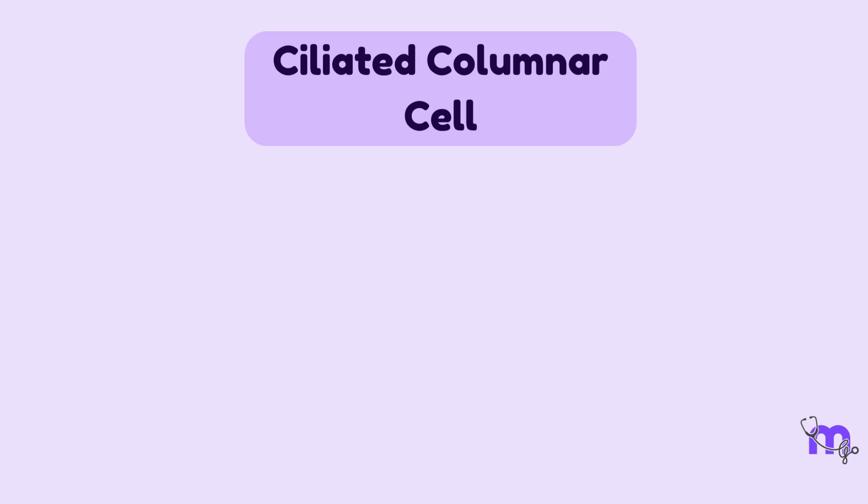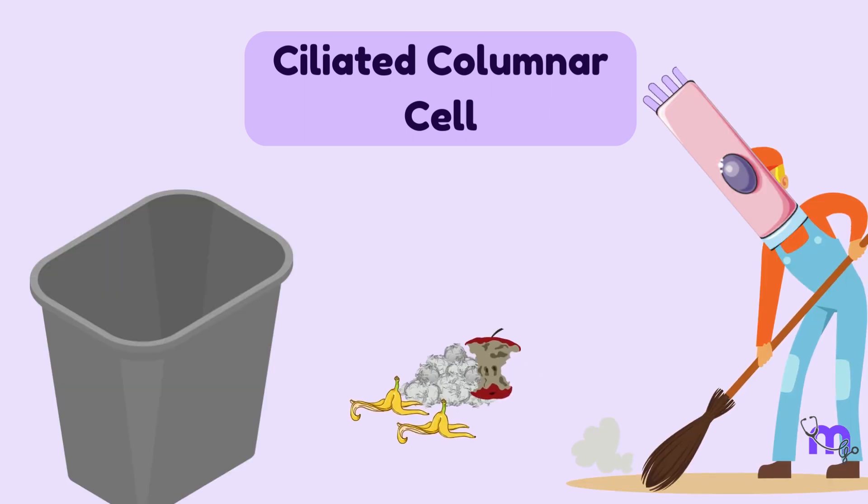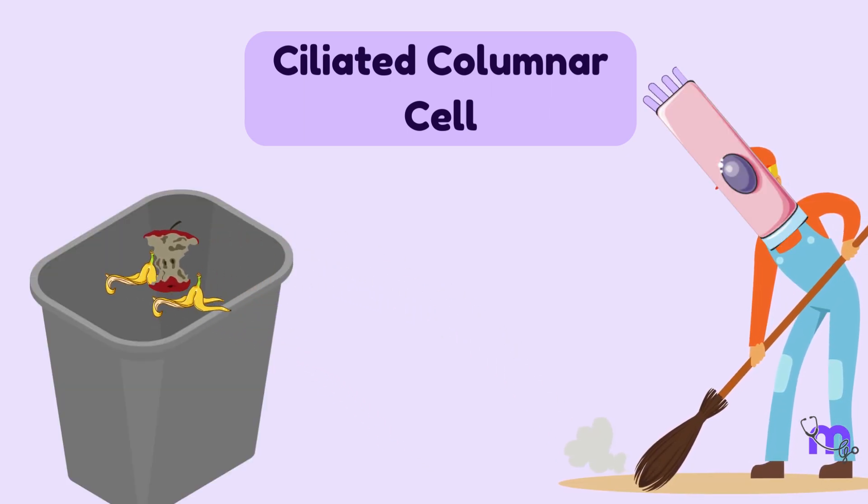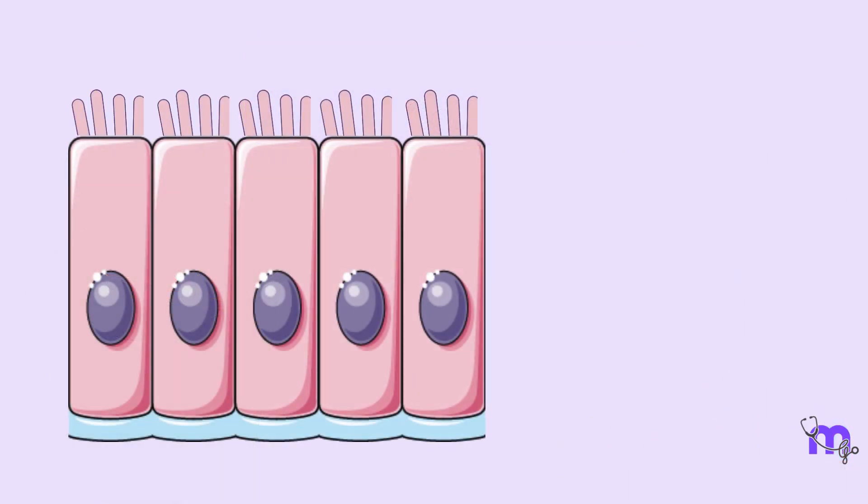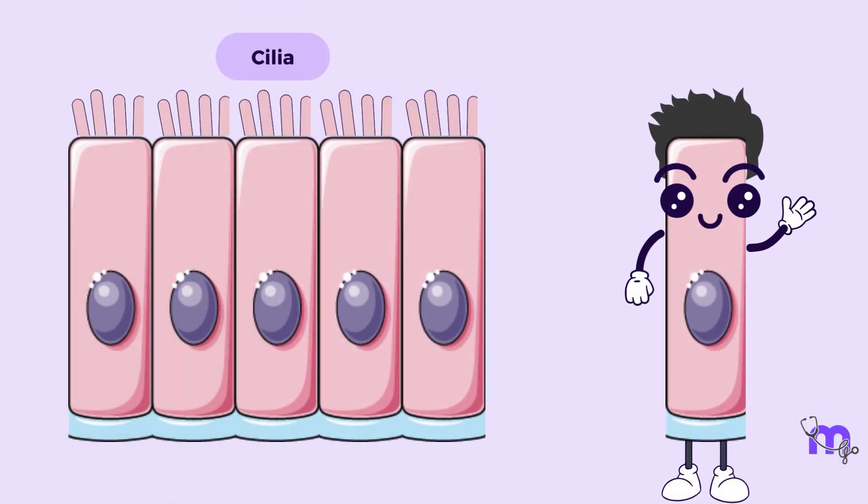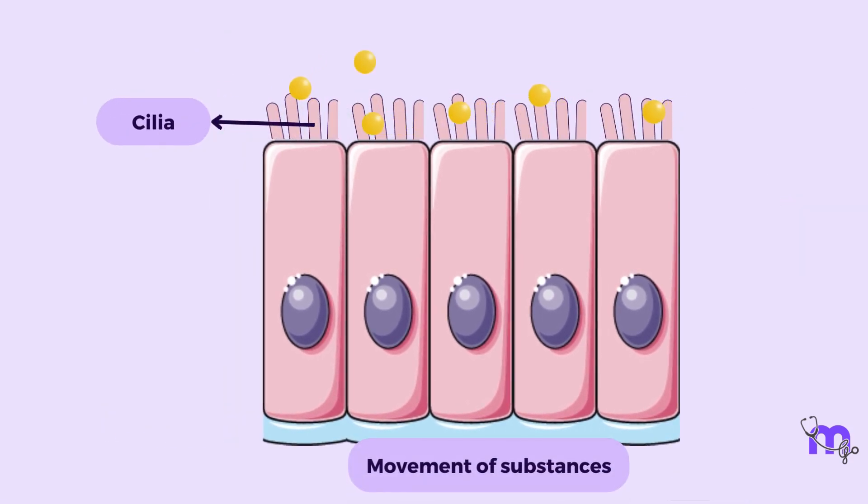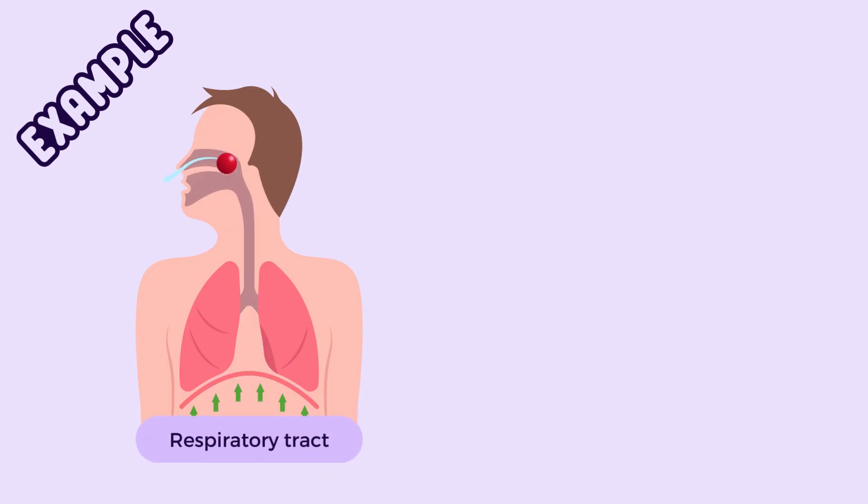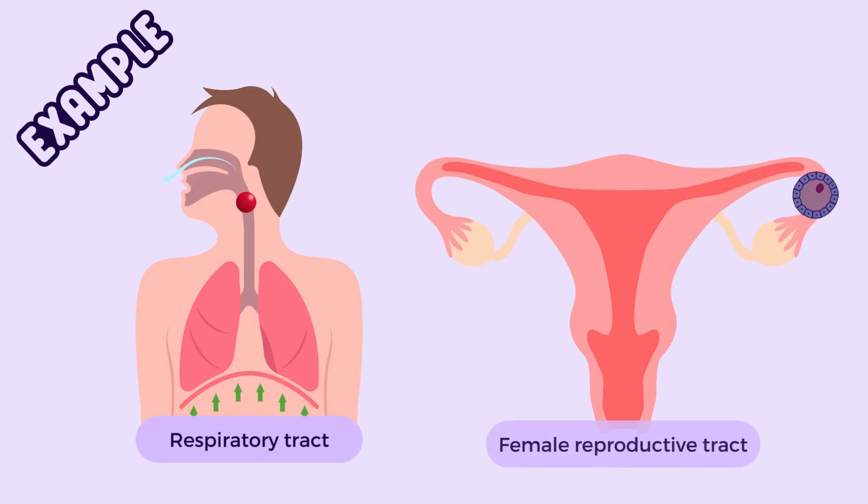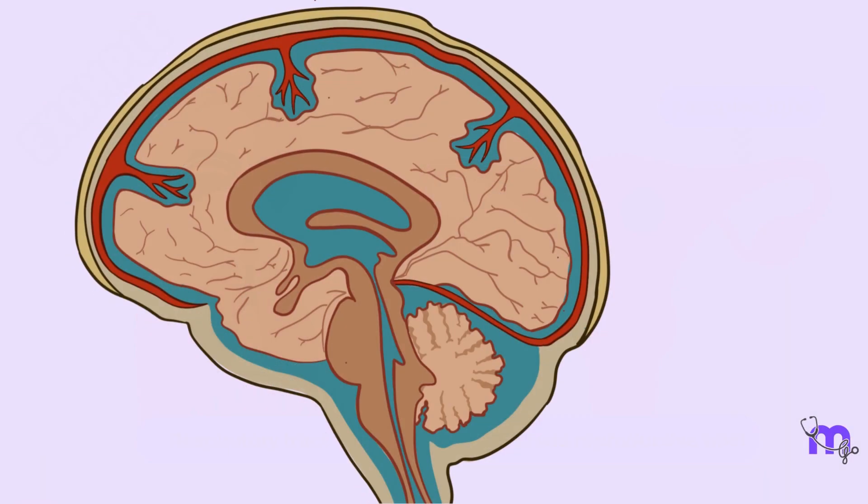The ciliated columnar epithelium is like a sweeper with a broom, sweeping dust in a particular direction. The columnar cells have cilia or hair-like projections on their upper surface which help in moving substances along. For example, moving mucus along the respiratory tract, ova through the fallopian tubes, and CSF along the ventricles of the brain and central canal of the spinal cord.